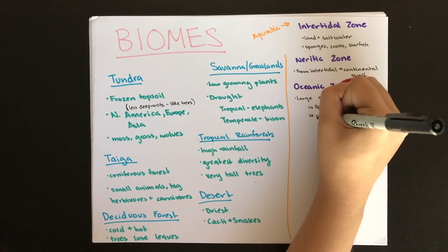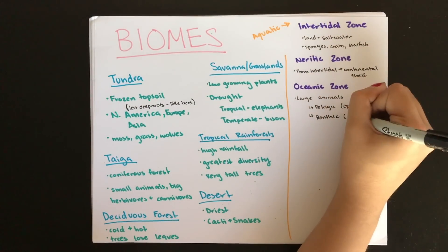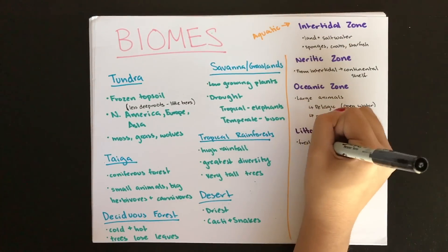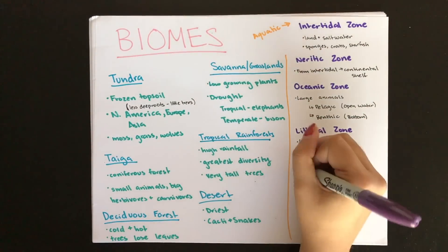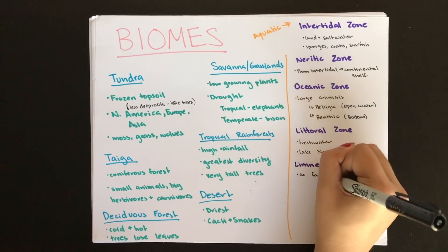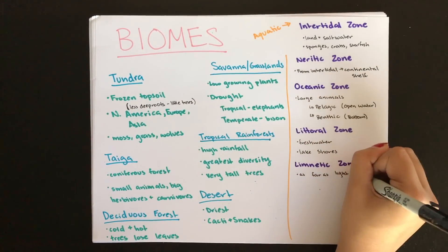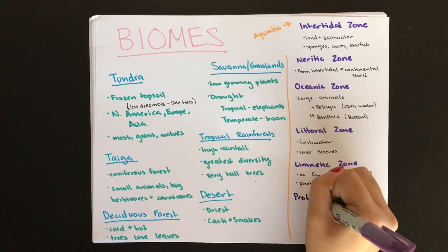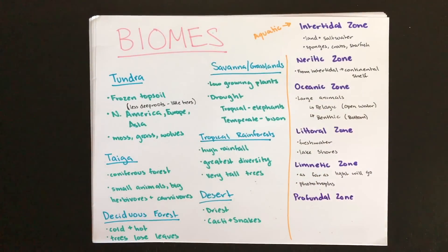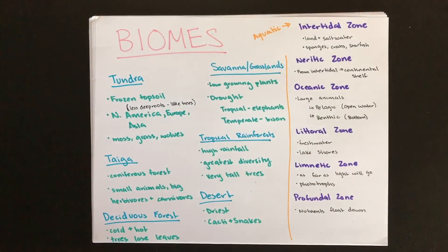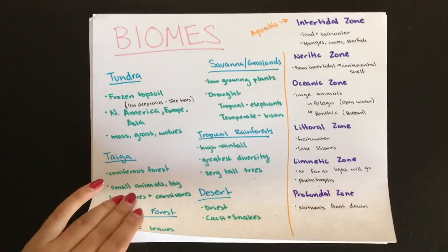The deepest portion of the ocean is called the abyssal zone. The littoral zone is a freshwater zone found near the shores of lakes. The limnetic zone is far from shore and extends as far down as light will penetrate, including several photosynthetic organisms. The profundal zone is the aphotic region of the lake where nutrients float down to support primary and secondary consumers.